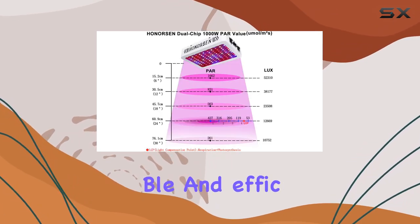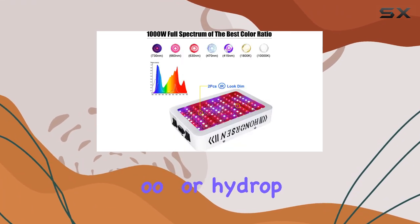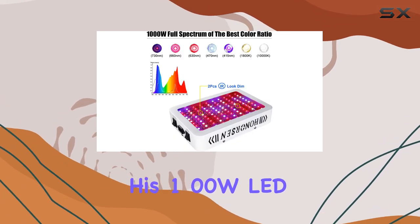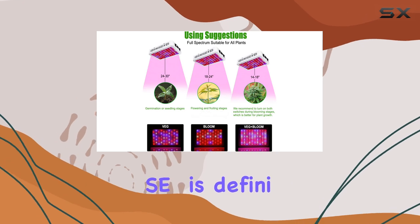If you're looking for a reliable and efficient grow light for your indoor or hydroponic garden, this 1000W LED grow light from Onersen is definitely worth considering.